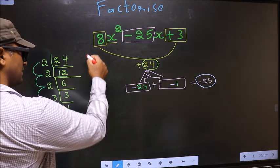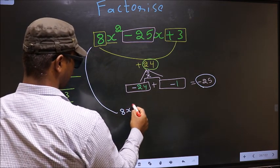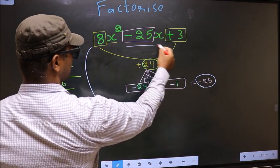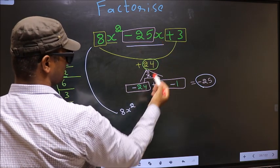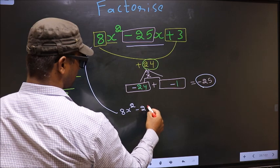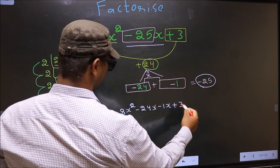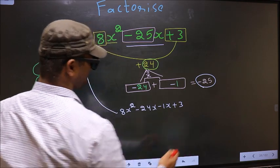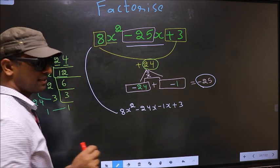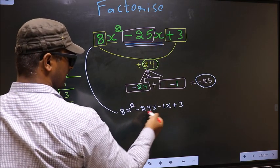Now you change this to 8x square. In place of minus 25x, now we should write this. That is minus 24x minus 1x plus 3. Did you understand? In place of minus 25x, I have written this.